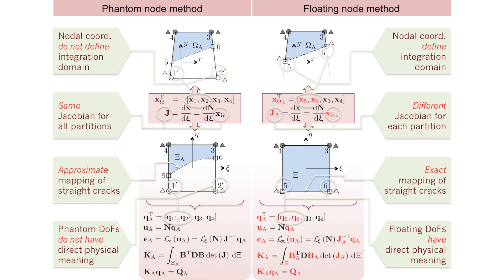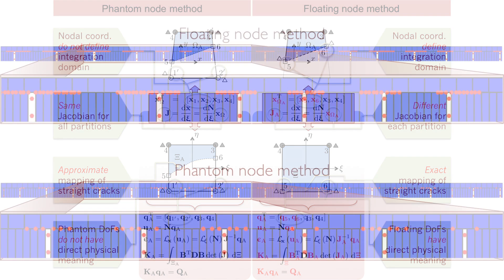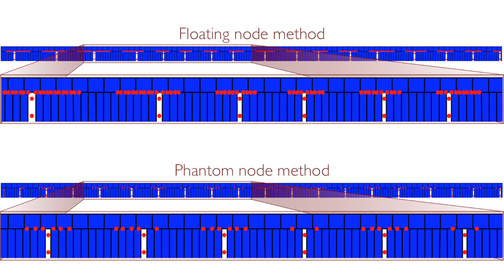To address this, we started by analyzing the phantom node method — its merits and its limitations in modeling kinking cracks. What started as an adaptation to the phantom node method became in the end a very different numerical method, creating the concept of floating degrees of freedom to achieve an exact local mesh refinement with the same type of numerical architecture as the phantom node method. This floating node method outperforms existing methods in simulating kinking cracks.